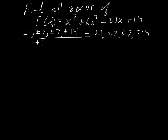Once we find one of these possible rational zeros that actually is a zero, we will have broken this problem down from a third power to a quadratic. Once we get to a quadratic, the guessing is over — we'll factor or use the quadratic formula. So let's just try them. I always start with x=1.